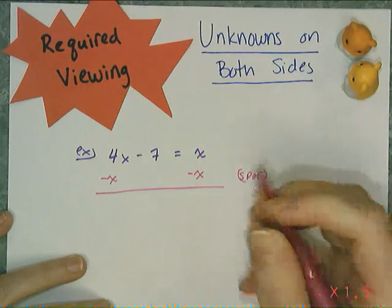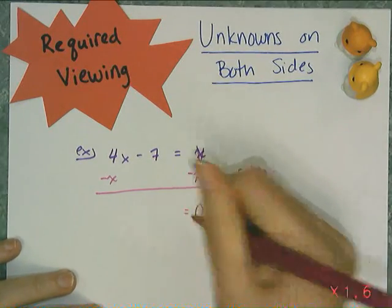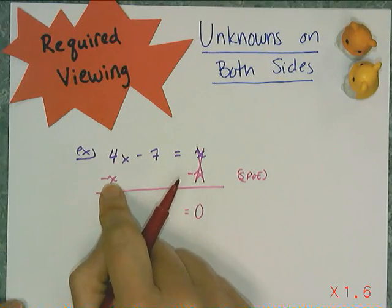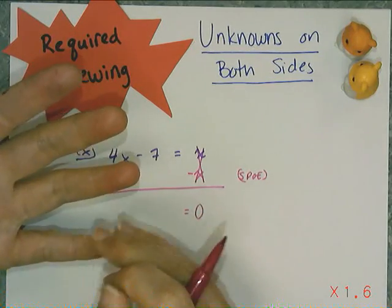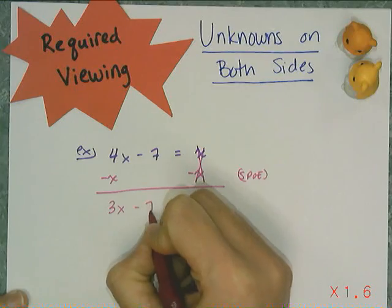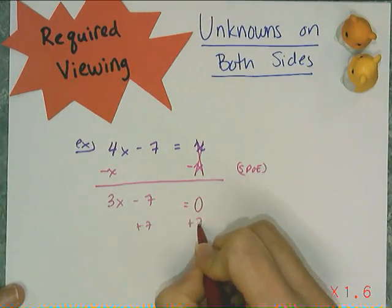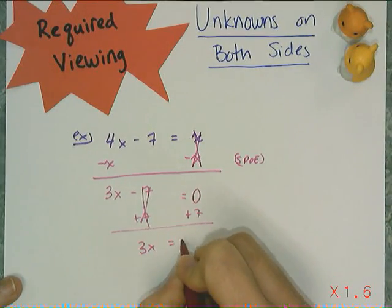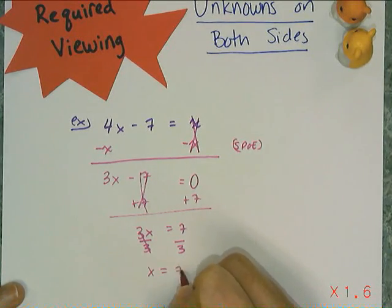Those x's are gone, and there's nothing left on this side, so it's now equal to 0. Then I have 4x minus x — I have 4x's and I take away 1x, which means I have 3x's left over and a minus 7. So now I have this two-step equation. I can add 7 to both sides — those are gone — and I get 3x equals 7. Divide both sides by 3, those 3's are gone, and I get x equals 7 thirds.